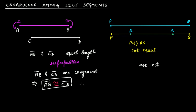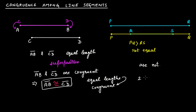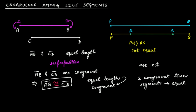Therefore, if two line segments are of equal length, those two line segments will be congruent. Conversely, if it is told to you that you have two congruent line segments, then instantly think that those two line segments are actually equal. So vice versa — equivalence means congruent, and two congruent line segments means they are of equal length. This is important.